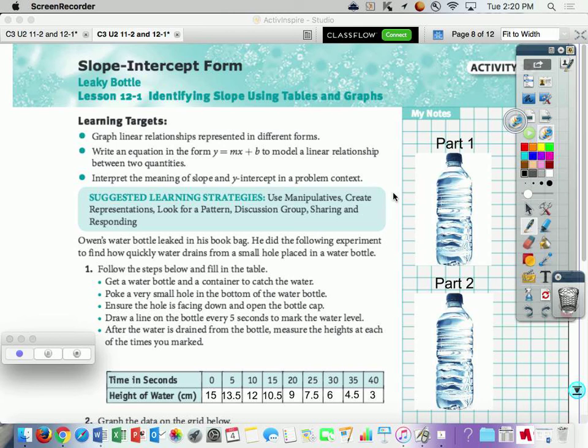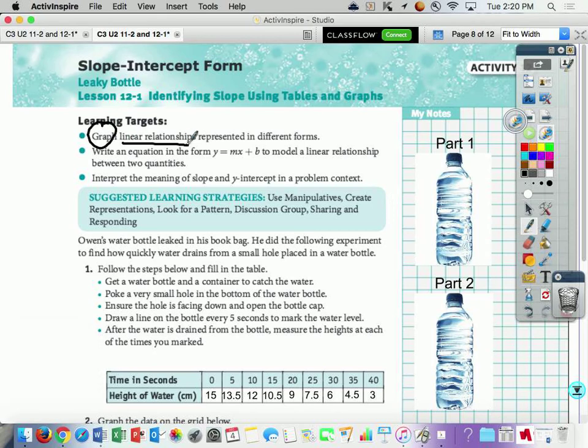All right, we are going to do Lesson 12-1. It's called Leaky Bottle. Okay, so let's mark up our learning target. We have graph linear relationships represented in different forms, write the equation in the form y equals mx plus b to model linear relationships, interpret the meaning of slope and y-intercept in a problem.